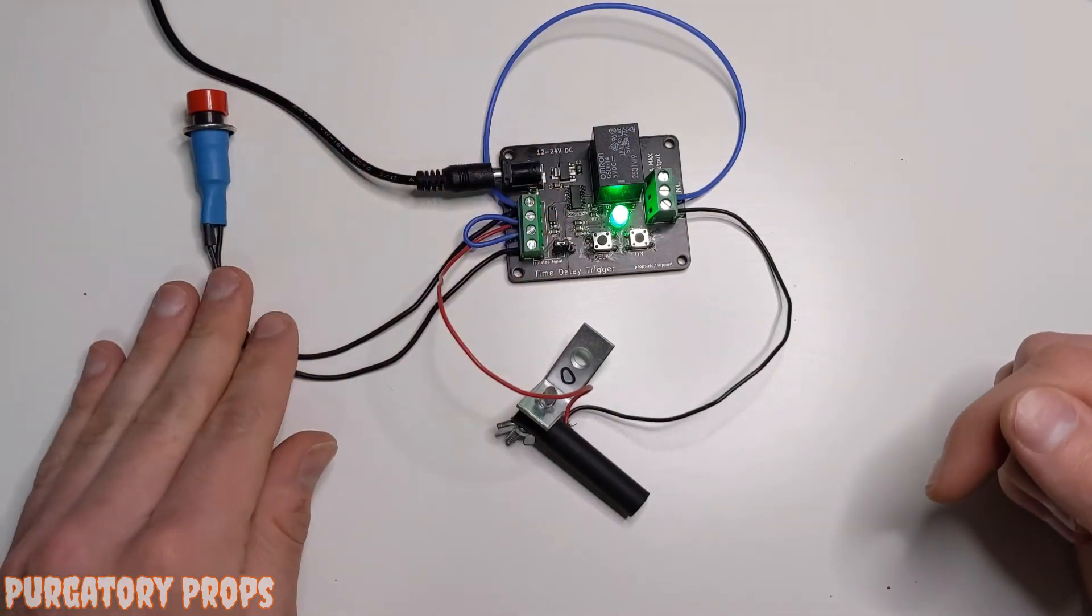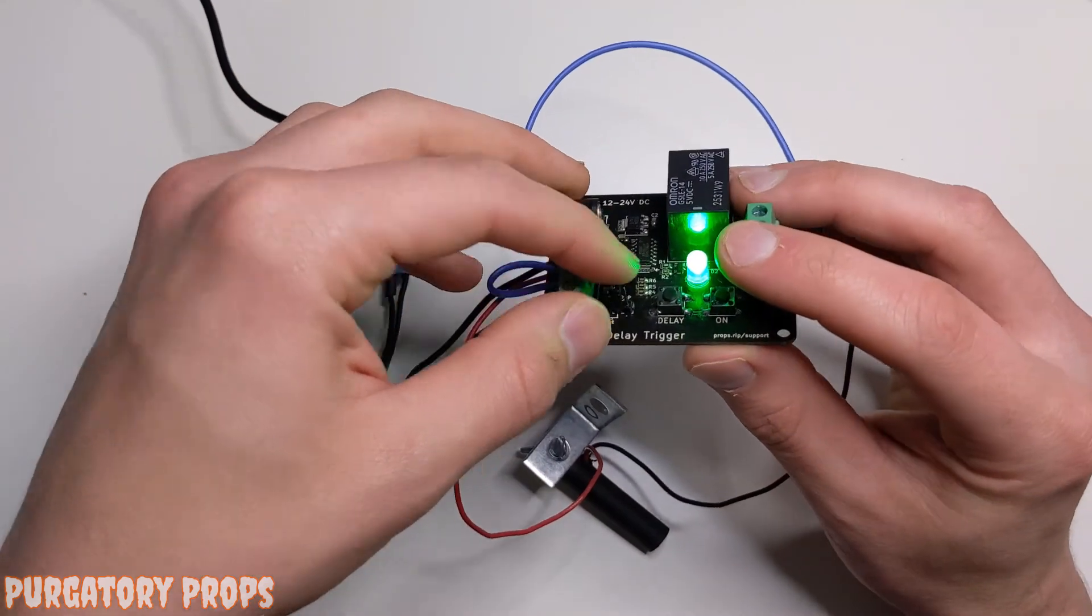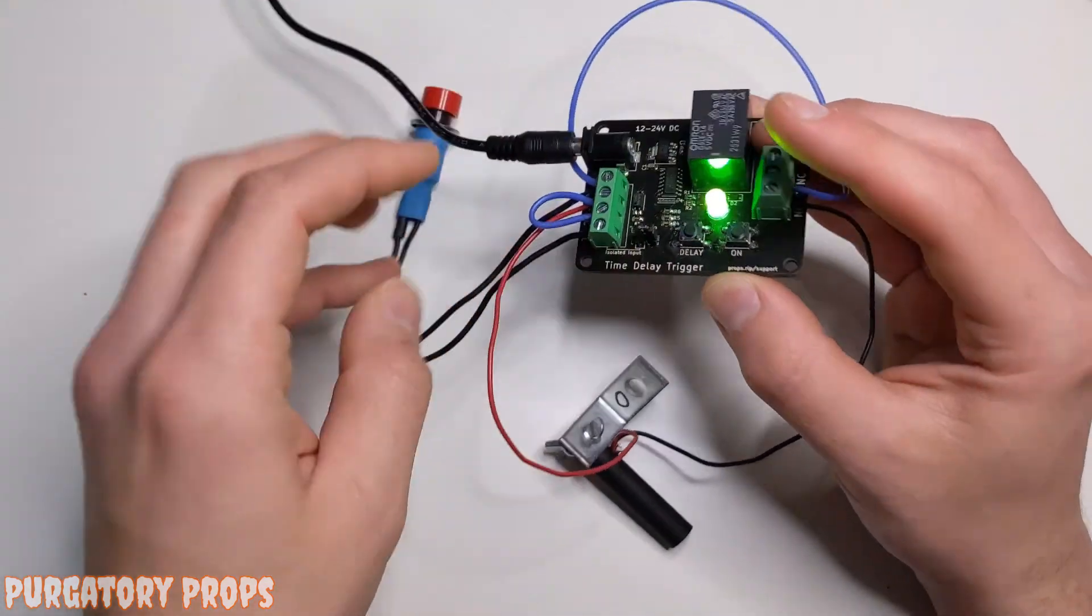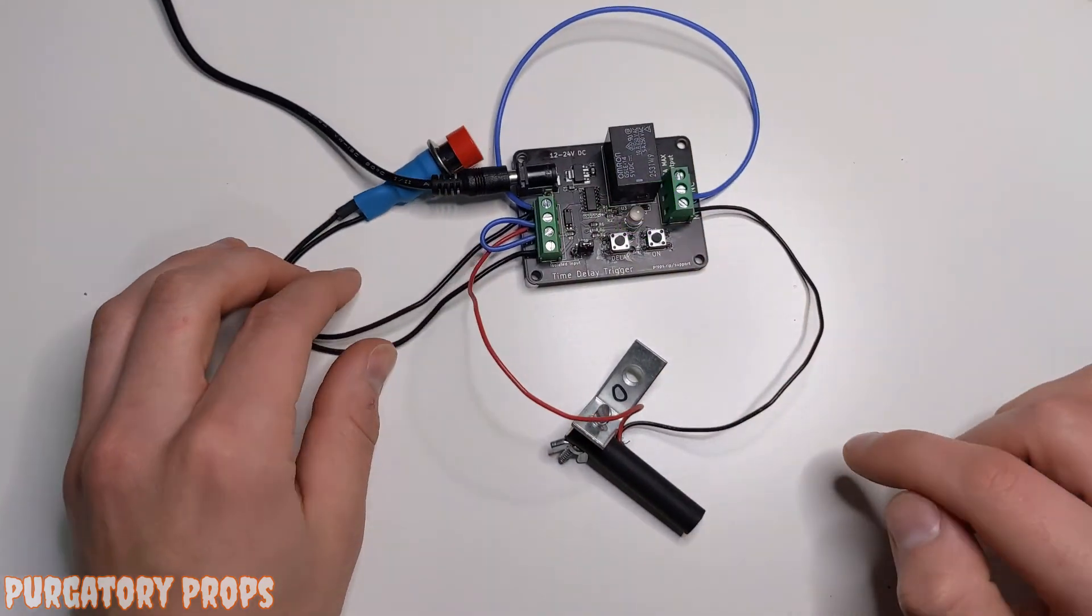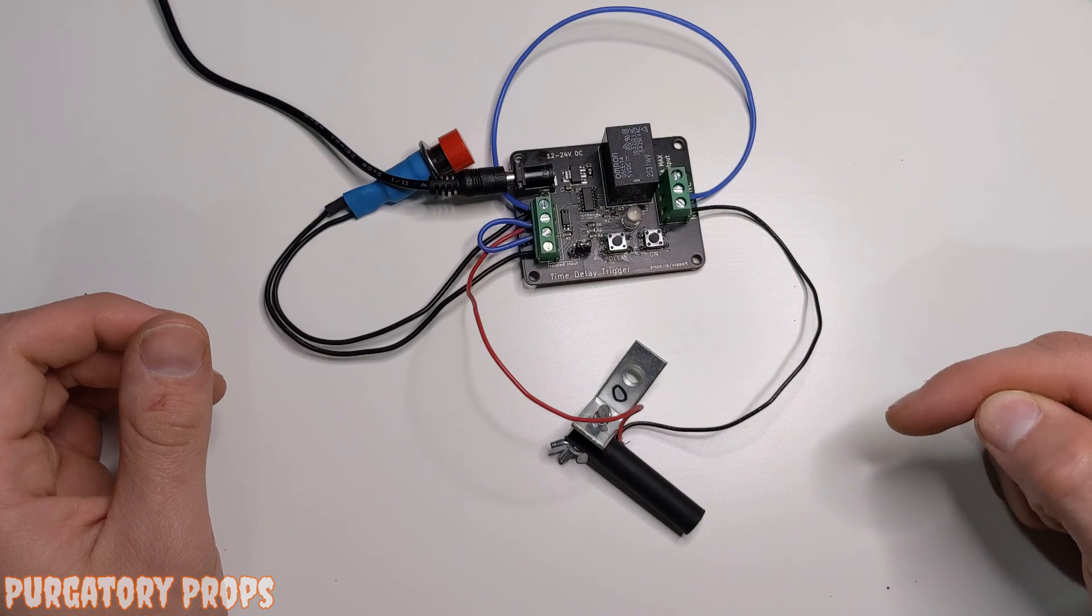If you want this to continuously loop without an external trigger, just take this little jumper, pull it off, and move it over. And you can see it started to go. So now this will continuously delay, then be on, then delay.